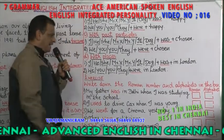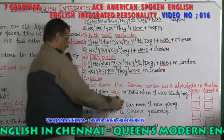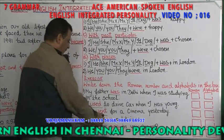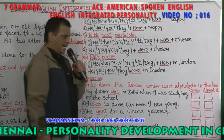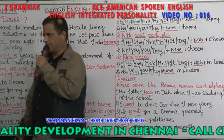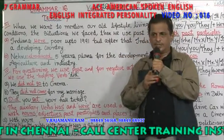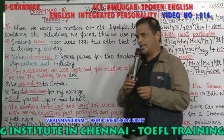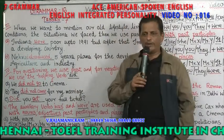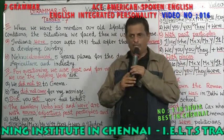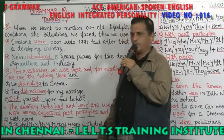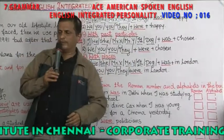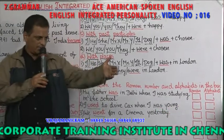Exercise: write down the Roman number and alphabets in the box. Examples: 'My father was in Delhi when I was studying in school' — past tense. 'I used to drive a car when I was young.' 'We went for a cinema yesterday.' 'They were politicians.' 'Did you pass in your examinations?' All these things are past tense. So far: past tense is used for past habits and behavior, with adverbs of time/manner/place, for old lifestyles and difficulties, for negatives using 'did not' plus present verb, and for questions using 'did.'